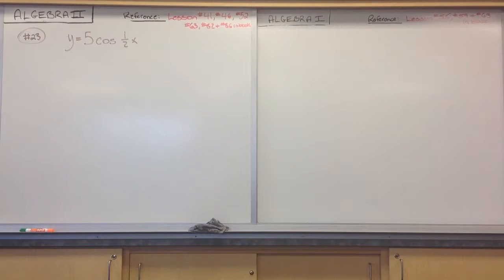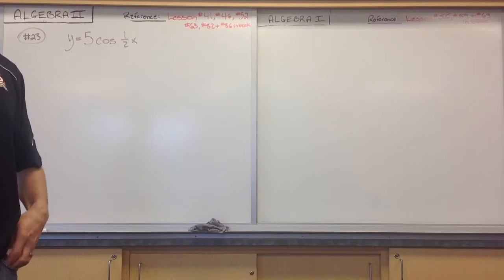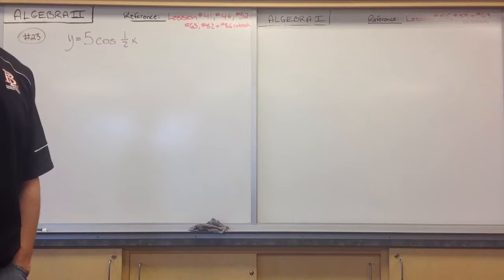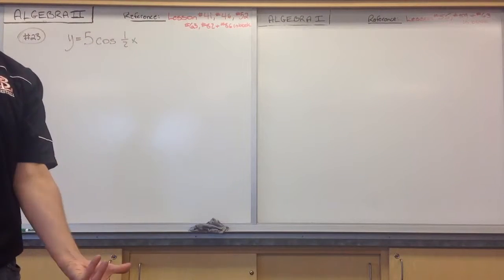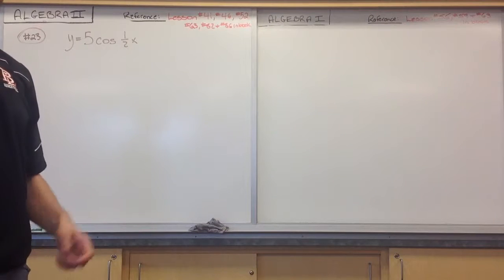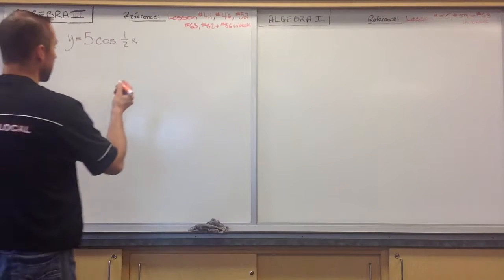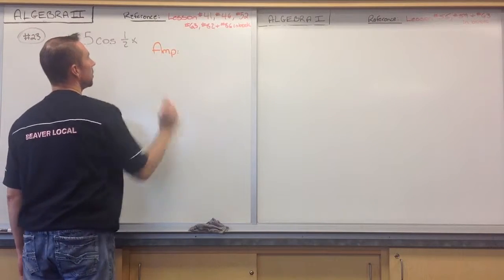To graph this, what's the first thing we have to figure out? Let's get an idea of what this picture is going to look like. How high is it going to go? How low will it go? We need to figure out the amplitude. So what is the amplitude of this particular function?